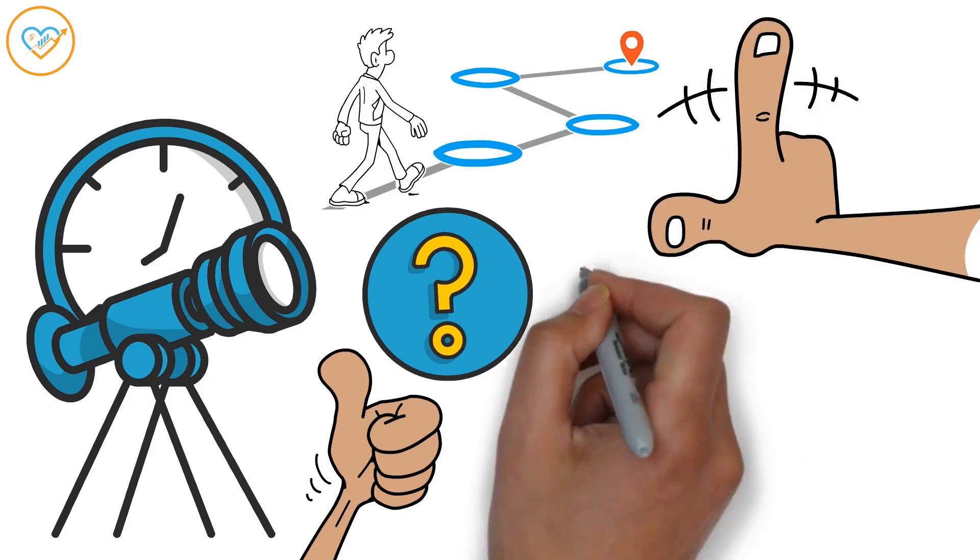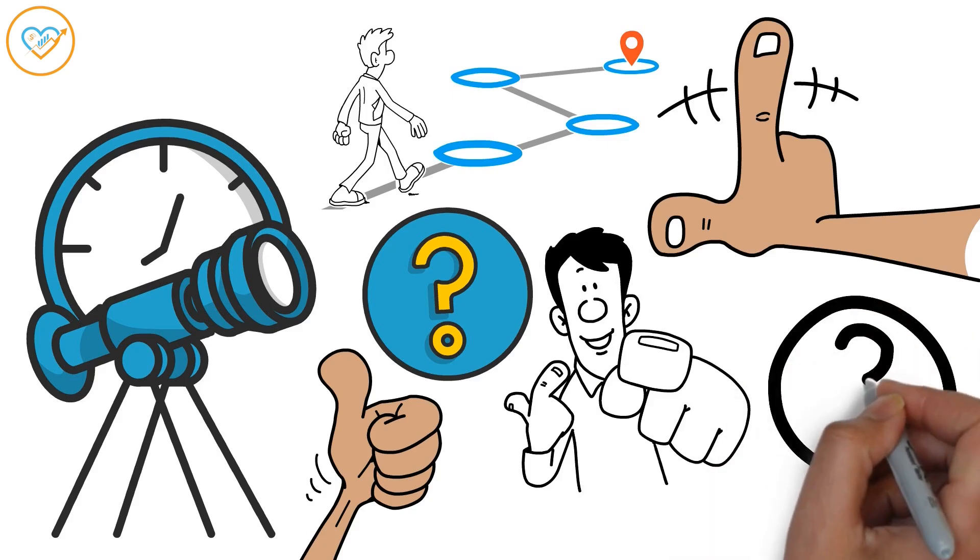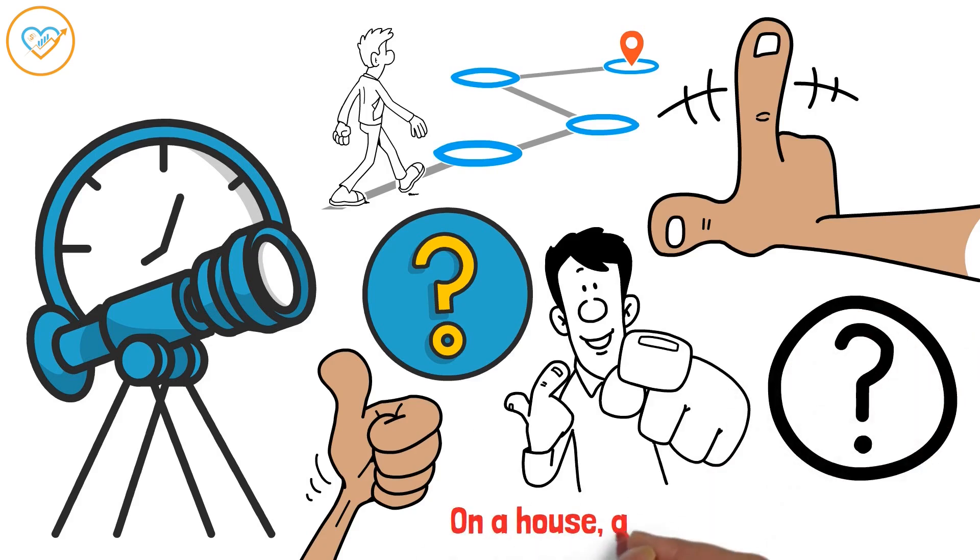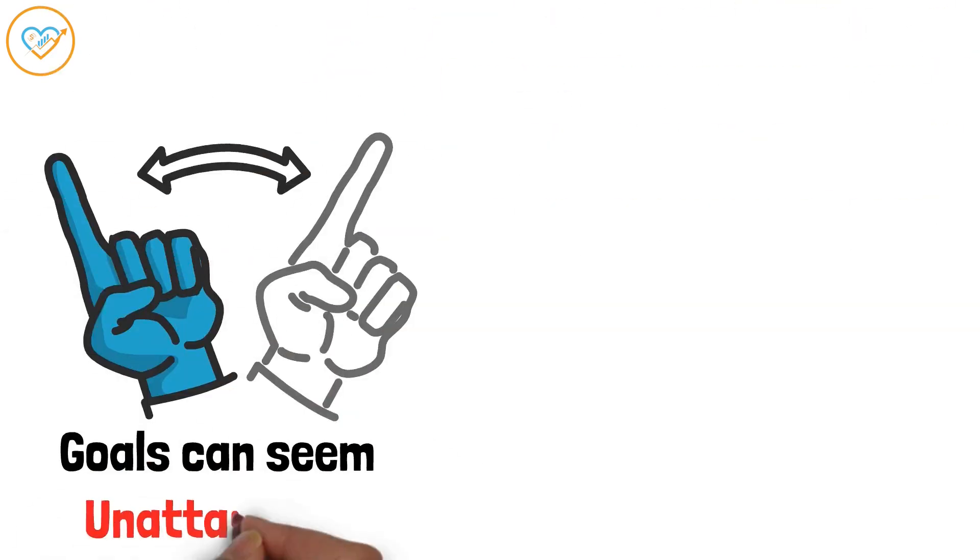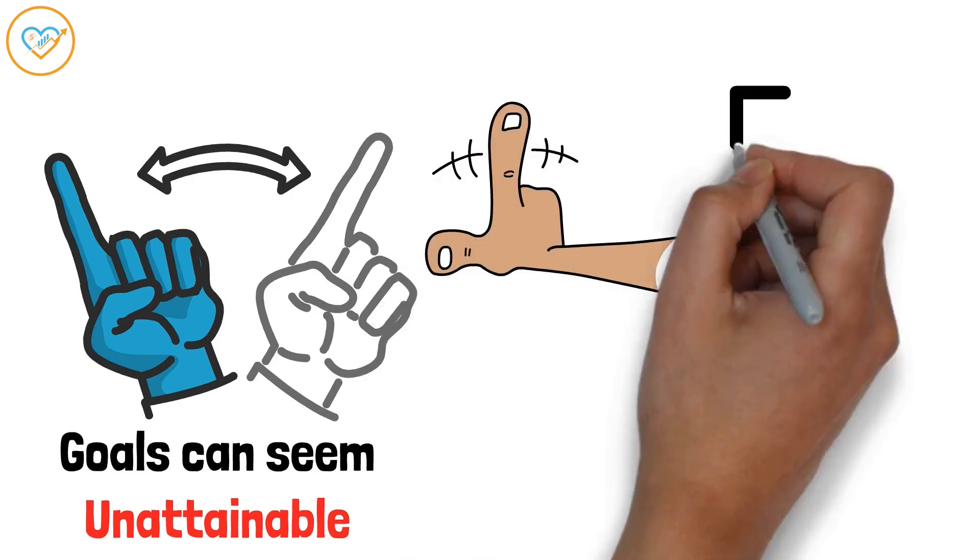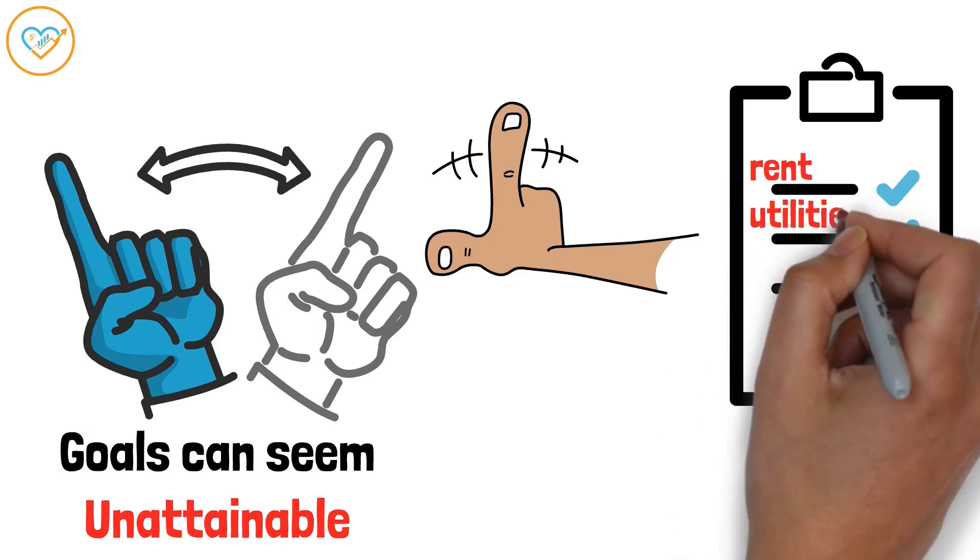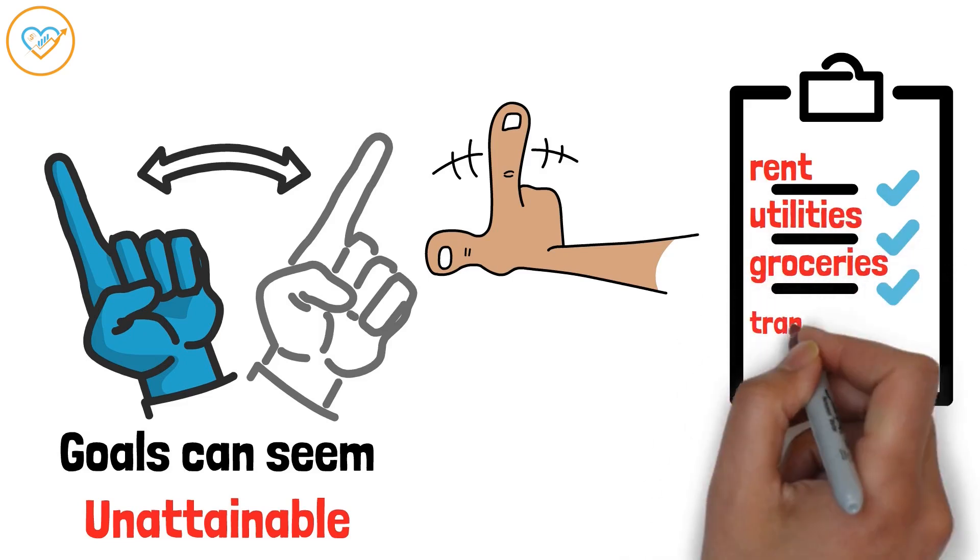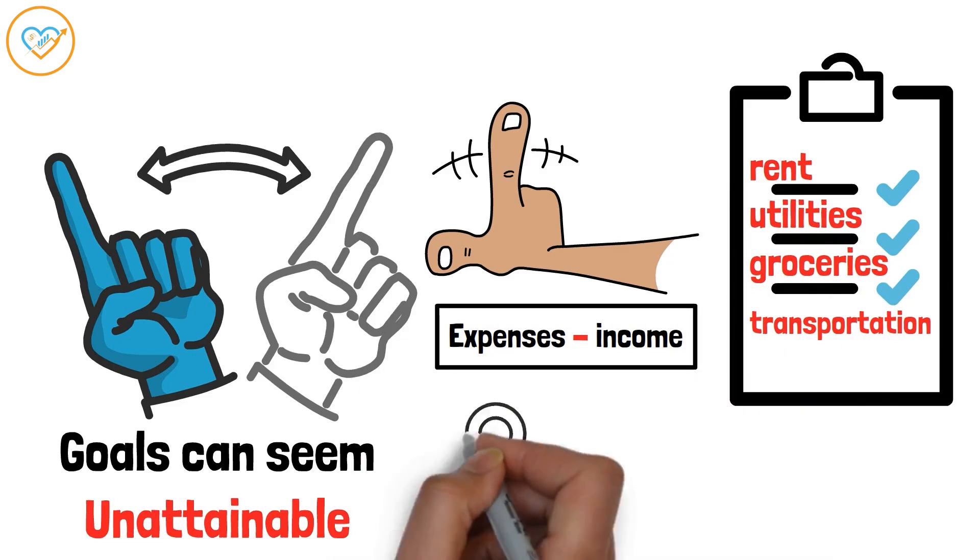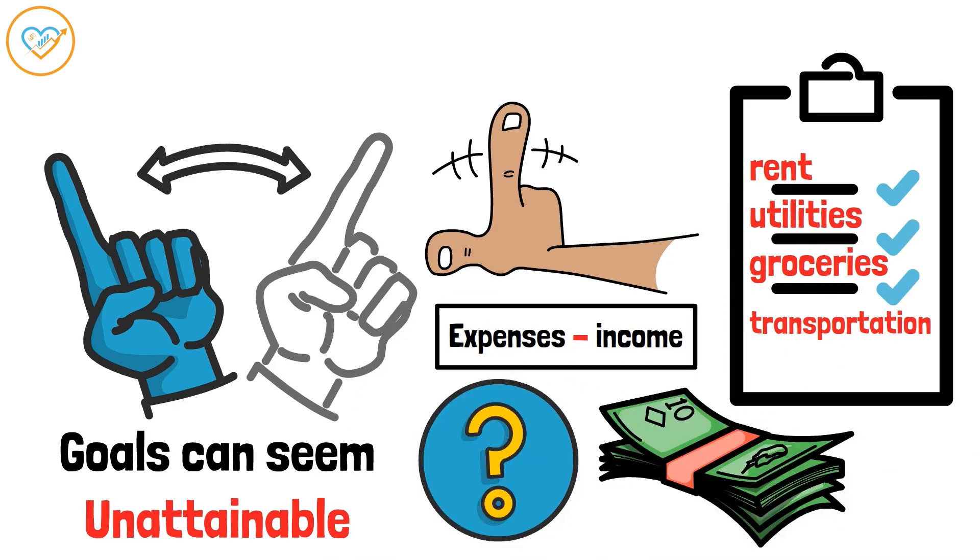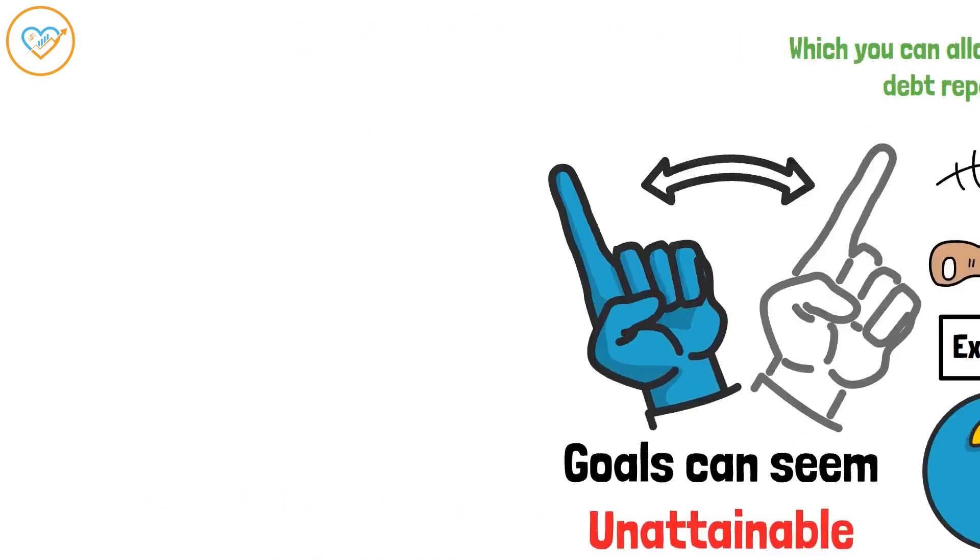Without a budget, you're essentially sailing blind. You might be able to cover your basic expenses, but what about saving for a down payment on a house, a new car, or retirement? Without a plan, these goals can seem unattainable. Creating a budget isn't rocket science. Start by listing your income. Then list all your expenses – rent, utilities, groceries, transportation, and so on. Subtract your expenses from your income to see how much money is left over. This is your disposable income, which you can allocate towards savings, debt repayment, or fun.